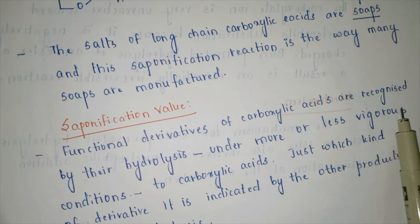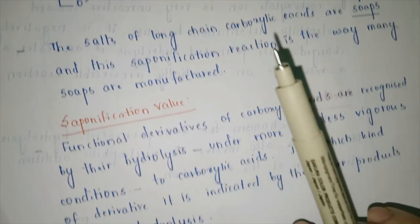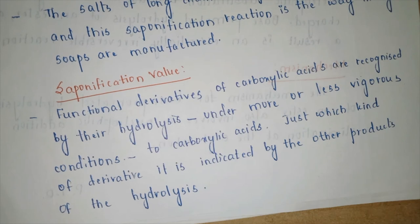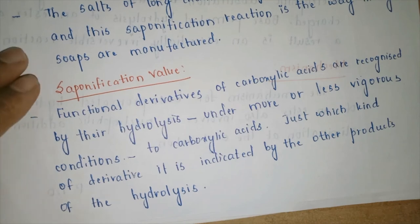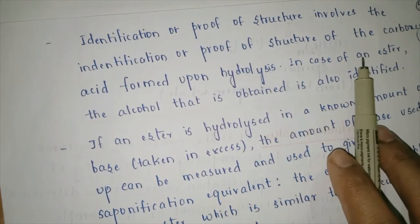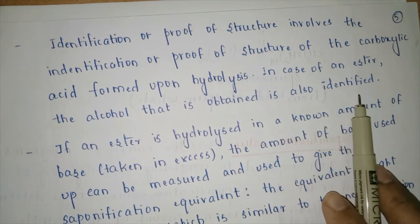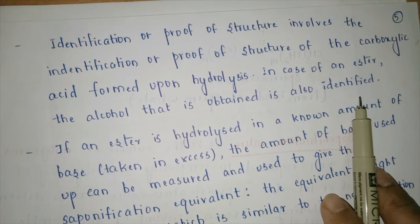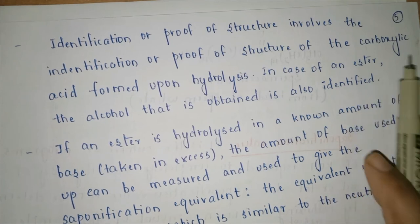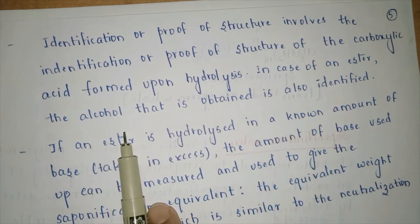Functional derivatives of carboxylic acids are recognized by their hydrolysis under various conditions to carboxylic acid. The identification of the structure involves identifying the carboxylic acid formed upon hydrolysis. In the case of an ester, the alcohol obtained is also identified. If we started with a fatty acid system, we identify the type of carboxylic acid; if we started from an ester, we identify the type of alcohol obtained.